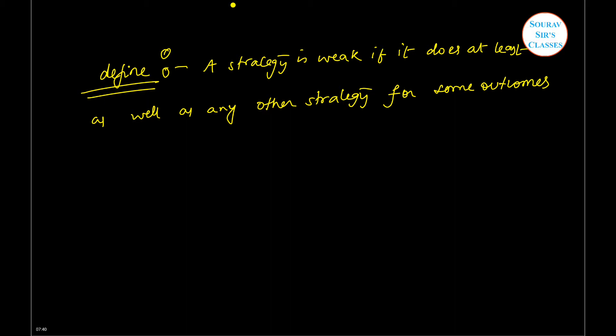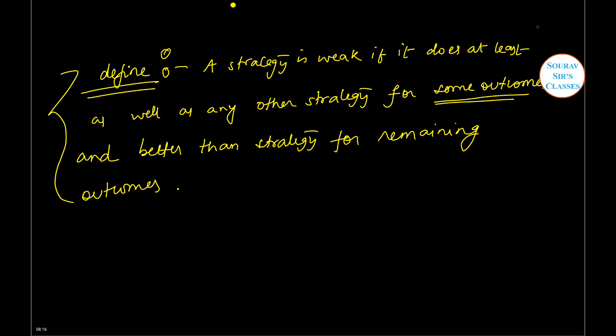Okay, so North was preferred to South, strictly preferred to South in case of some situation, as well as North was as good as South in some situation, and better than strategy for remaining outcomes. And in certain situation North was strictly preferred to South. Okay, so both these parts of the definition is being satisfied. This will be the definition of a weakly dominance strategy.